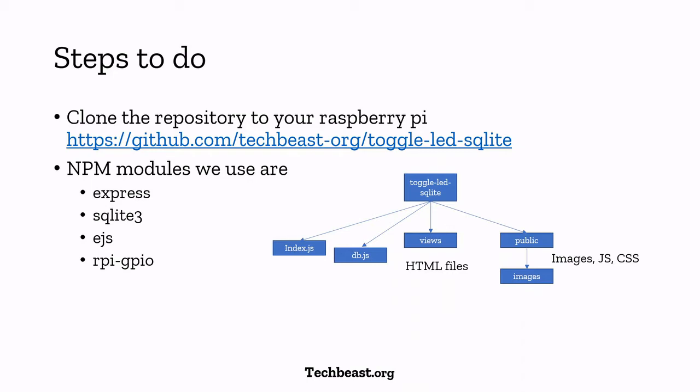On techbeast.org we write a lot of open source programs and code to teach easily. We have already developed a simple code — you can clone the repository, install it, and run the application. The npm modules used are: Express, which is used with Node.js for building APIs easily; sqlite3, which is the database we're talking about; ejs, an HTML rendering engine that lets you pass data from Node.js to HTML; and rpi-gpio, an npm module that will help us toggle the LED on and off.